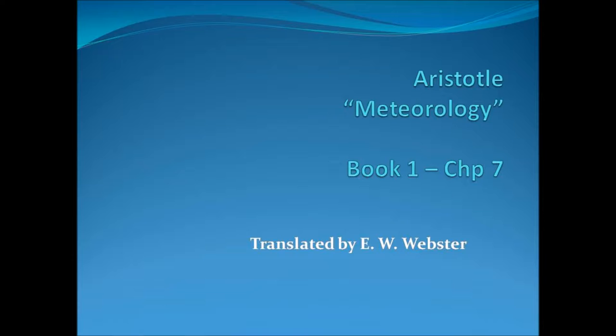We know that the dry and warm exhalation is the outermost part of the terrestrial world which falls below the circular motion. It, and a great part of the air that is continuous with it below, is carried round the earth by the motion of the circular revolution. In the course of this motion it often ignites wherever it may happen to be of the right consistency, and this we maintain to be the cause of the shooting of scattered stars.